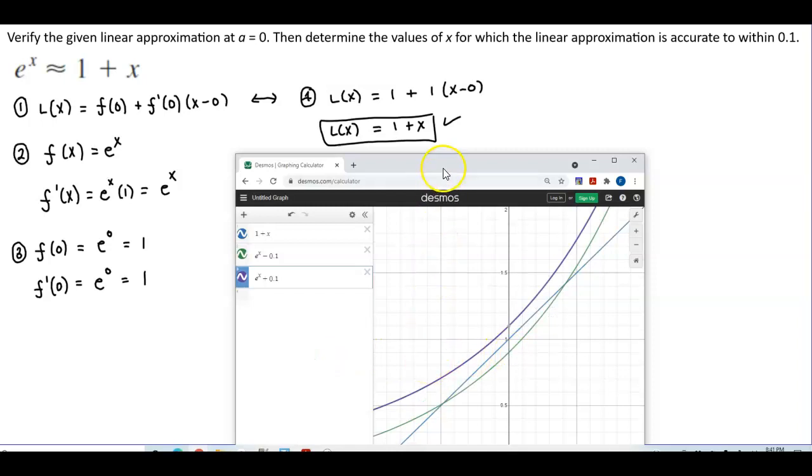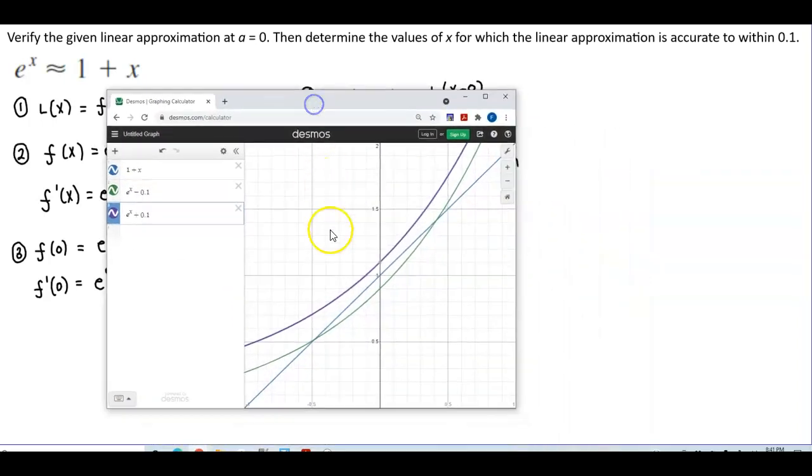Okay, so if we take a look here, we can see that the purple represents e to the x plus 0.1, and the green represents e to the x minus 0.1, and we can see that it intersects the linearization between those values.